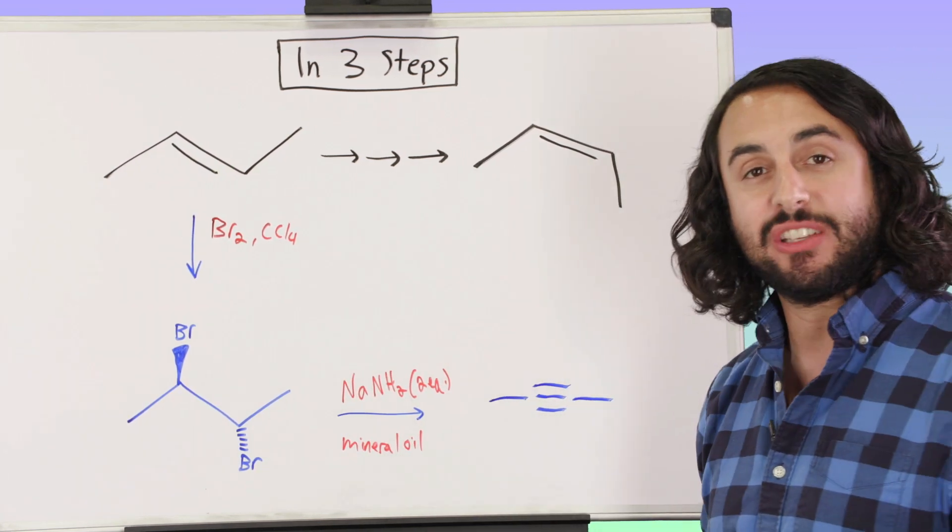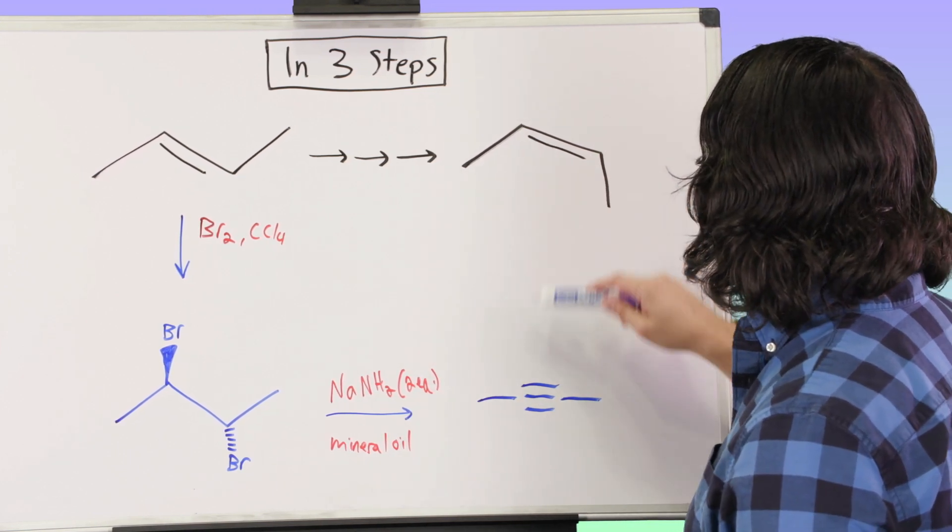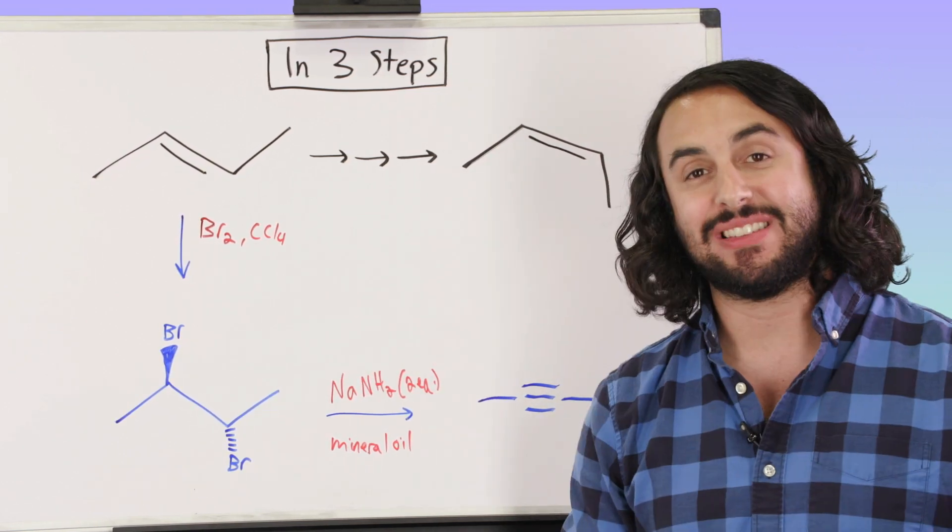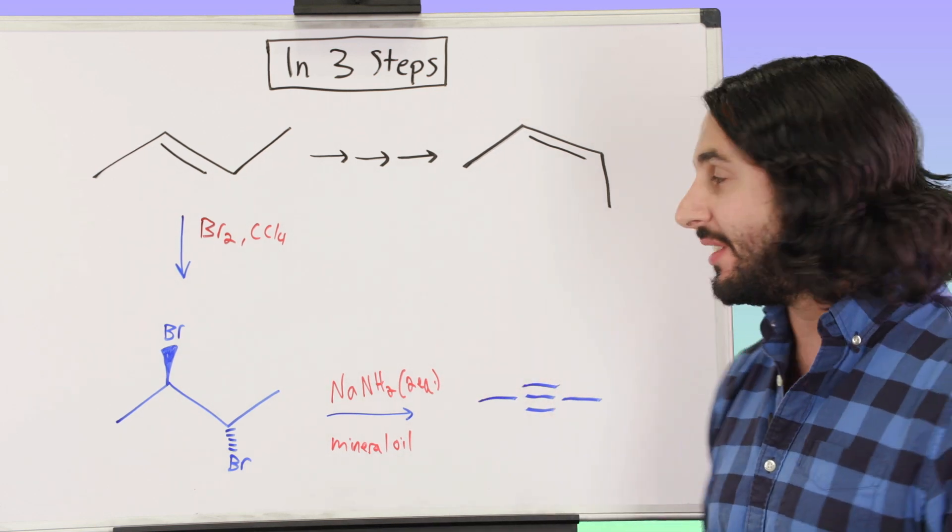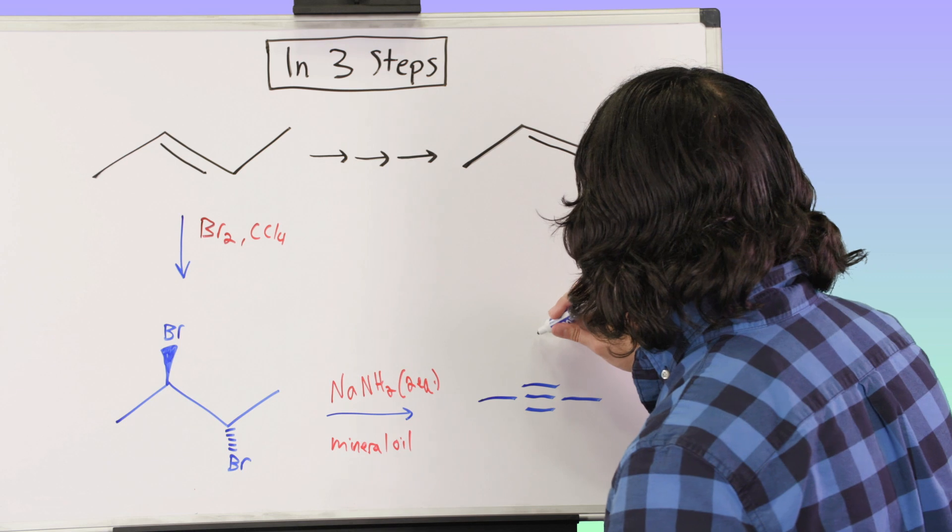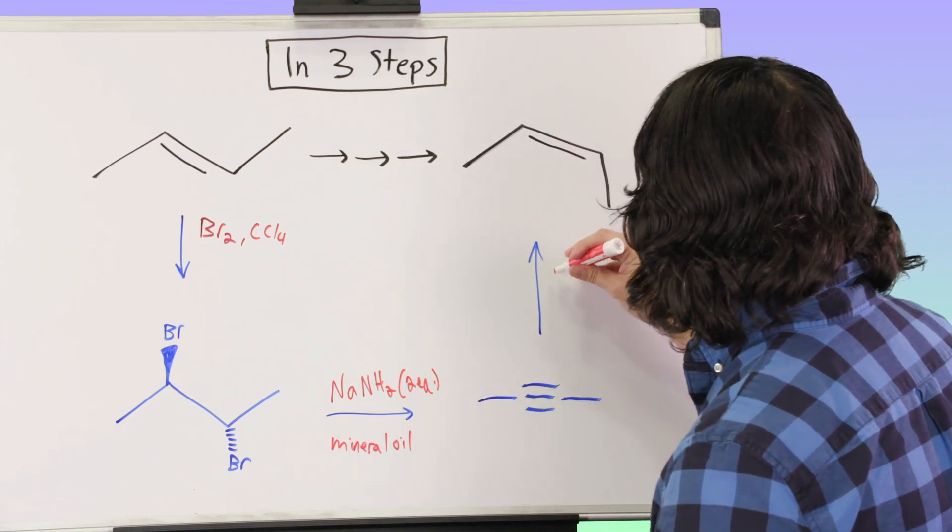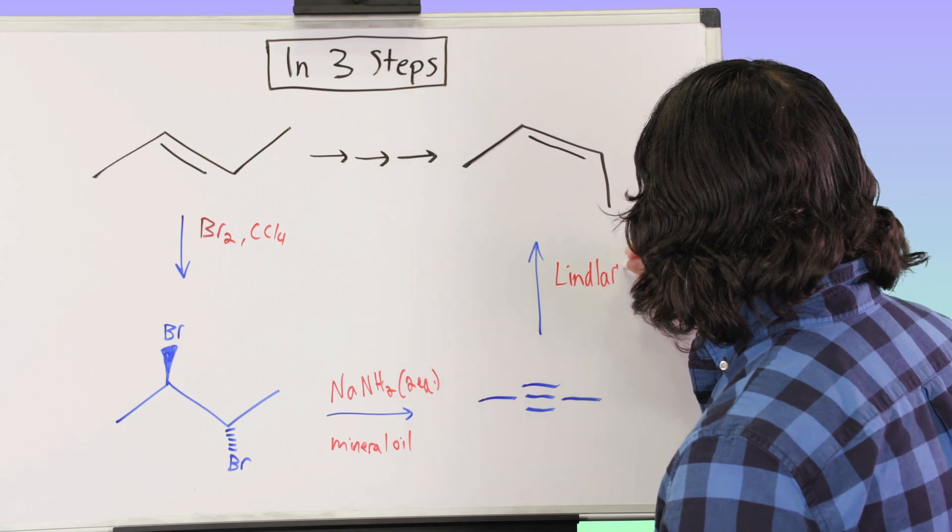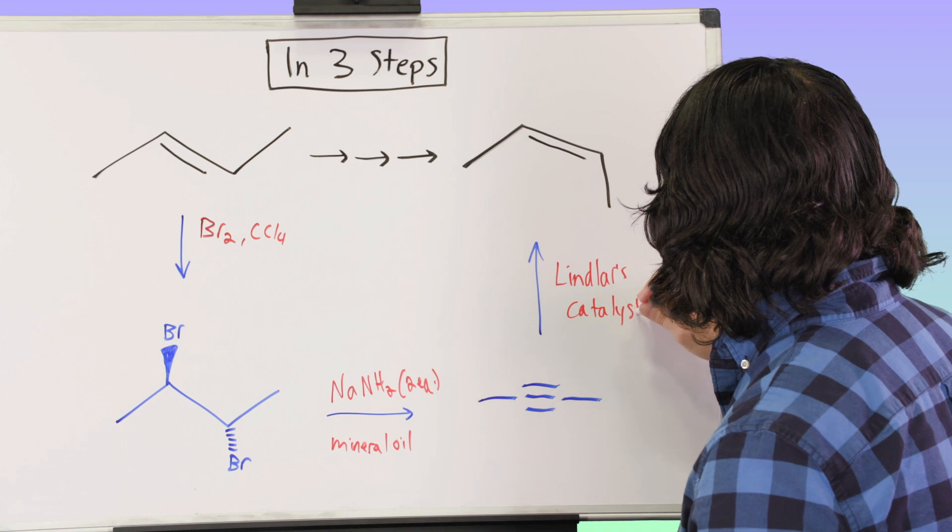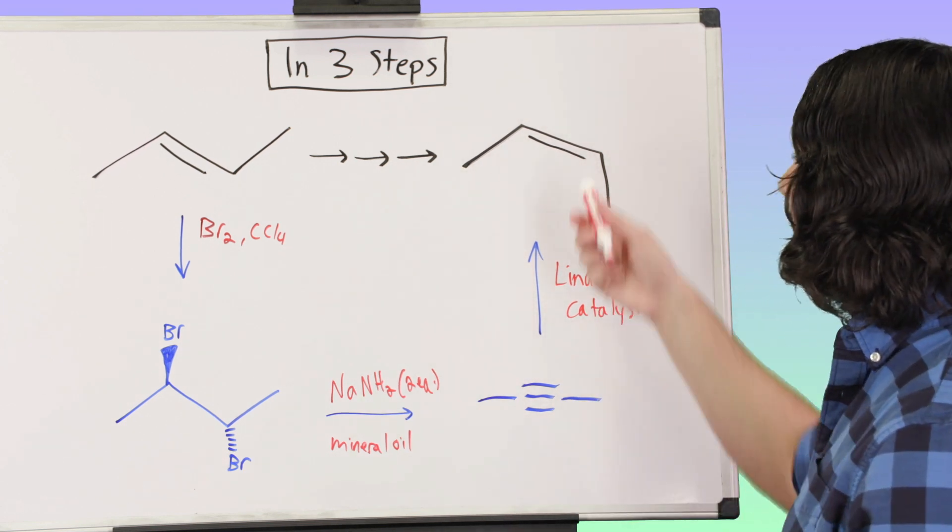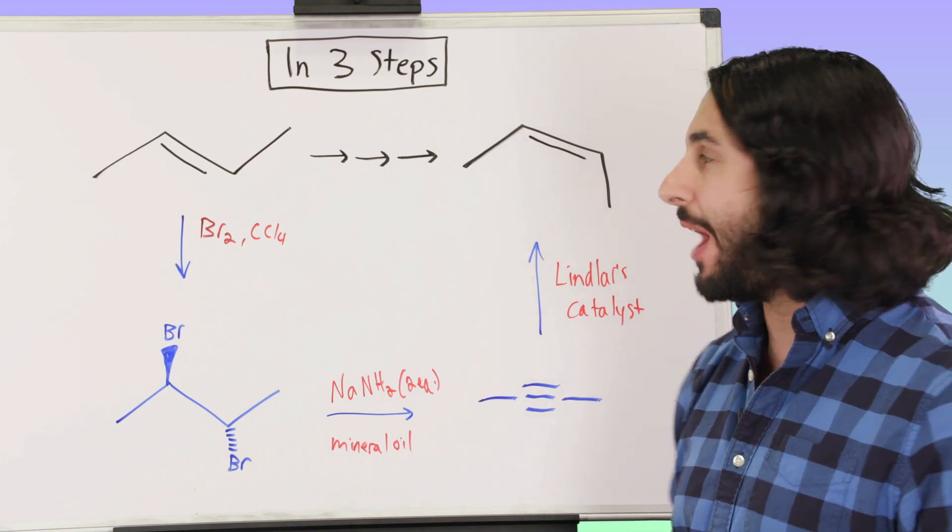We're going to get to that alkyne that we wanted. We knew we were going to do that because we had this strategy in mind - that was the first thing we thought of. The best way to get that Z-alkene is by hydrogenation. And if we remember our method for doing that, we're going to use Lindlar's catalyst.